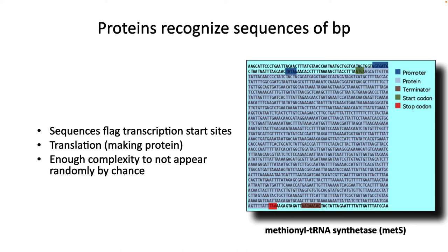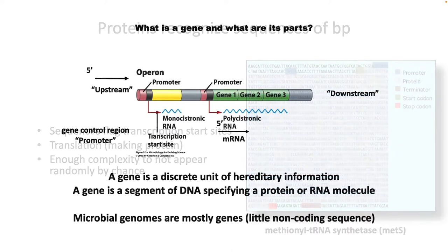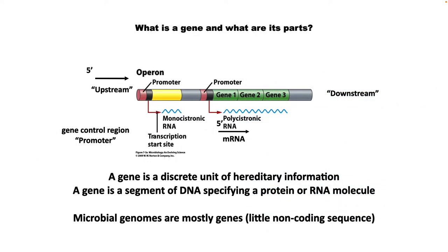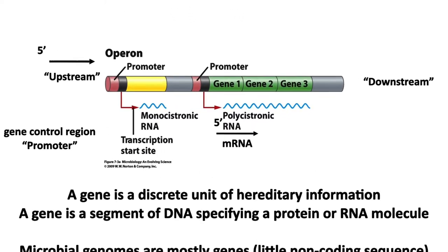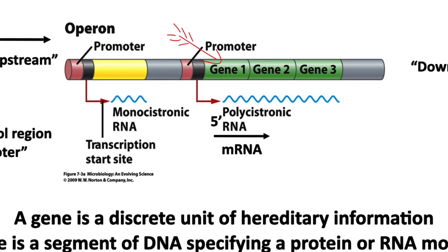Thus, the cell transcription and translation machinery won't initiate transcription or translation at incorrect spots on the DNA. To make things easier to understand, scientists have labeled the DNA of each organism and come up with conventions for talking about its structure. A gene is an area of DNA that is transcribed and most often translated to a macromolecule that serves a function in the cell.